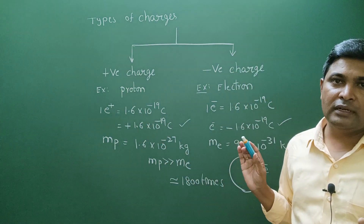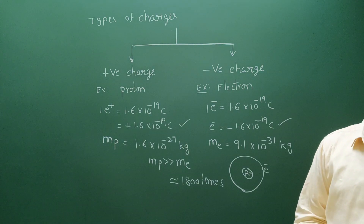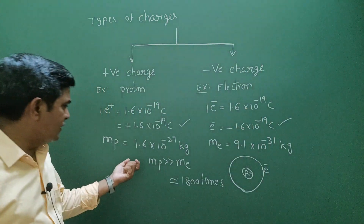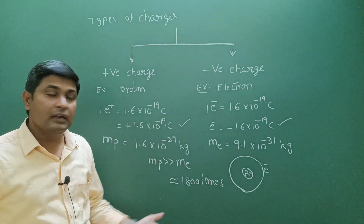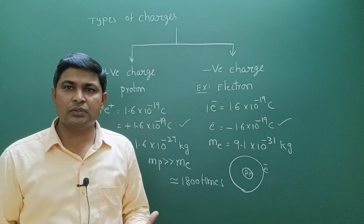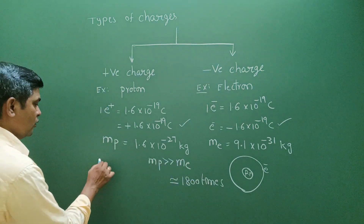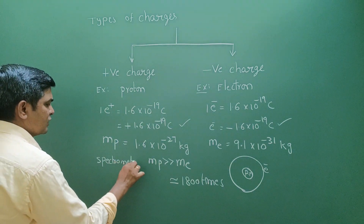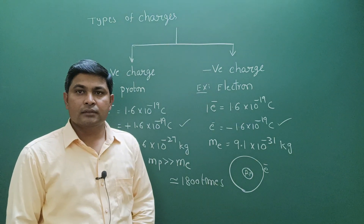The charge value is 1.6 × 10⁻¹⁹ C. These are very small quantities — proton mass is 1.6 × 10⁻²⁷ kg and electron mass is 9.1 × 10⁻³¹ kg. By using a spectrometer, the masses of the proton and electron have been calculated. That's all about types of charges. Thank you.